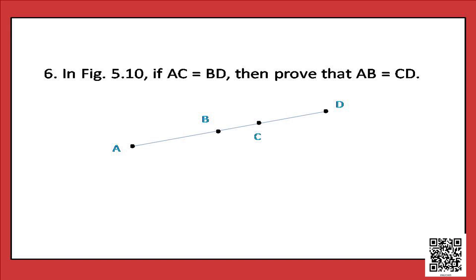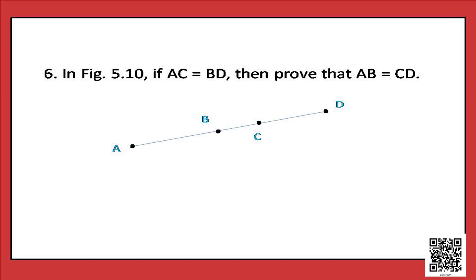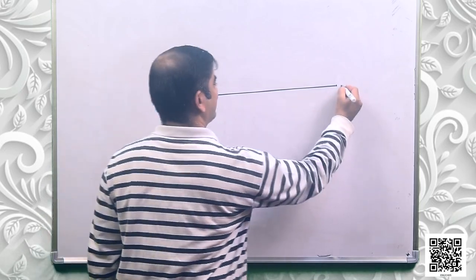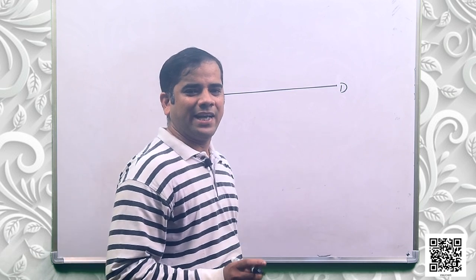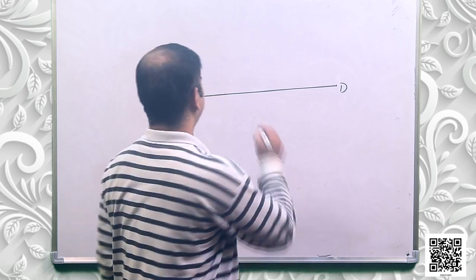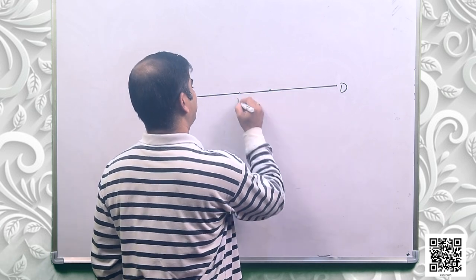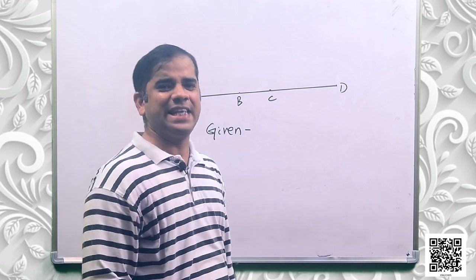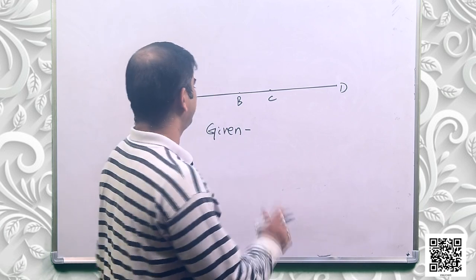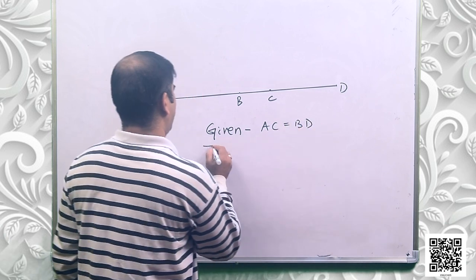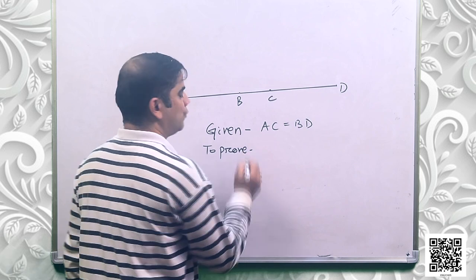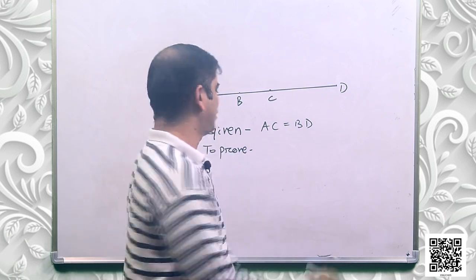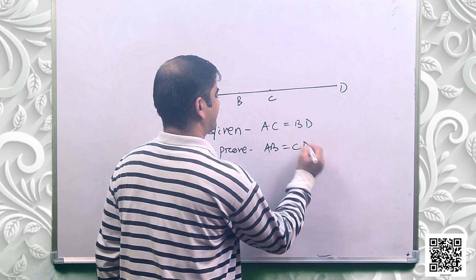In figure 5.10 as per your book, if AC is equal to BD, then prove that AB is equal to CD. Let us draw the diagram first. There is a line segment AD with two more points on it — one is B and another is C. It is given that AC is equal to BD, and we need to prove that AB is equal to CD.